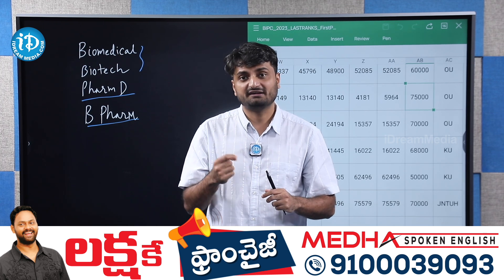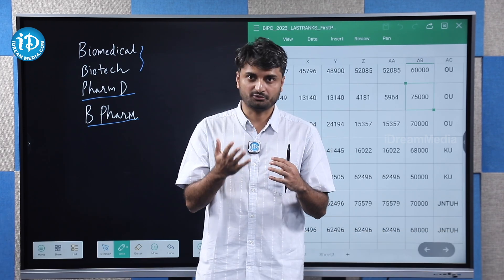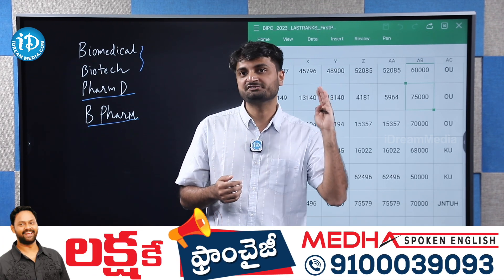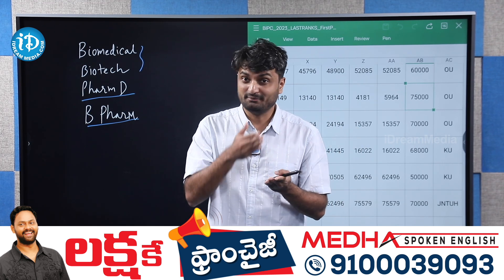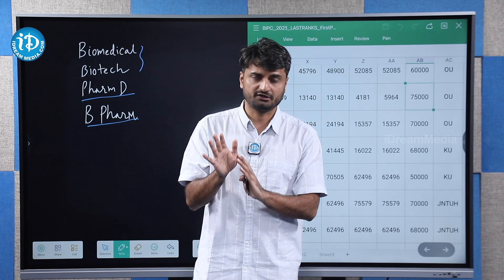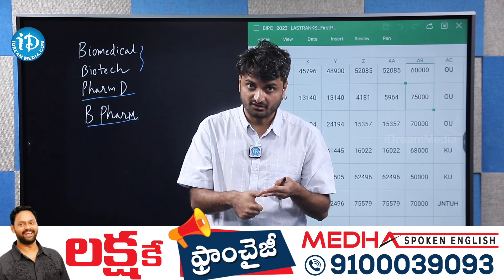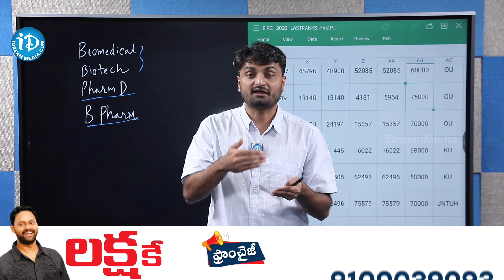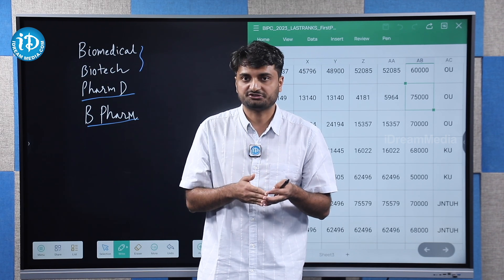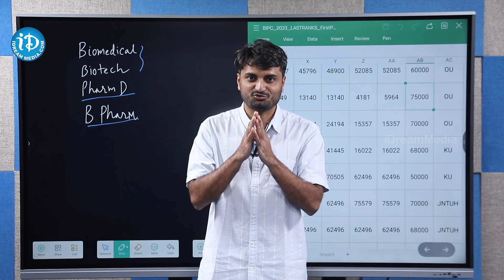Regarding placements, when you make your course decision, the job market will keep changing. Even IIT Bombay had 30% students unplaced — that is the top college in the country and placements are still challenging. You will join for four years and the market will change by then. Don't choose a college based on placements alone. Check the college's history, research output, quality of faculty members, and alumni success. Consider these four factors when making your decision. If you have any doubts, comment below and we will definitely respond. Thank you so much for joining.